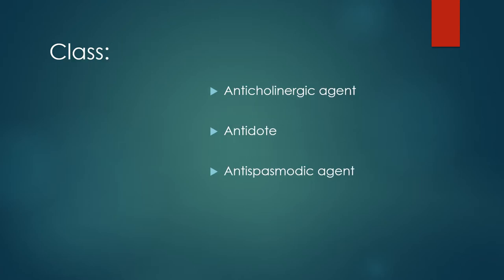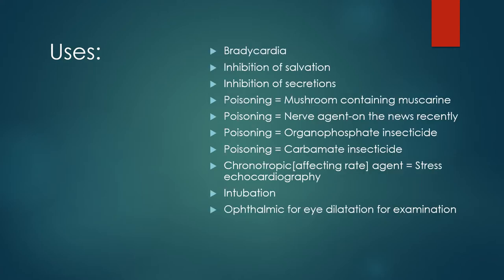It belongs to the class of medications known as anticholinergic agents. It is an antidote and also an antispasmodic agent. It is used mostly in bradycardia and also in the prevention or inhibition of salivation. In anyone with excessive secretions, atropine can inhibit those secretions.